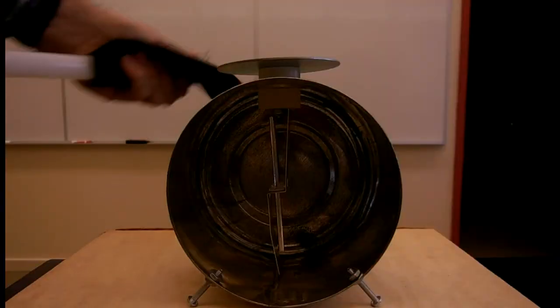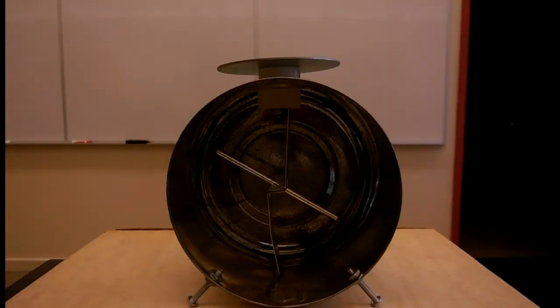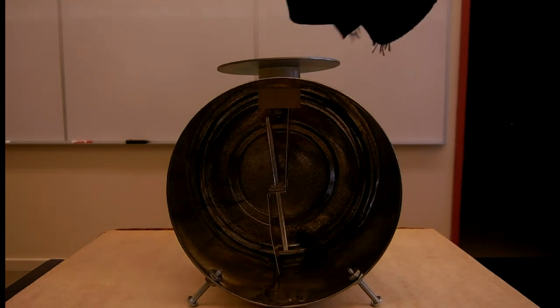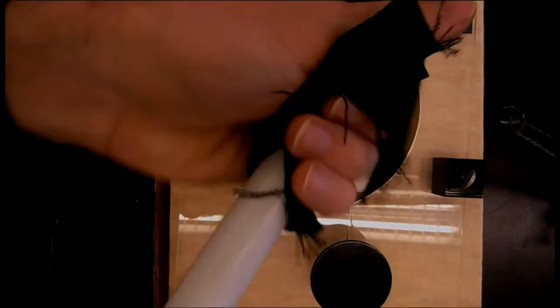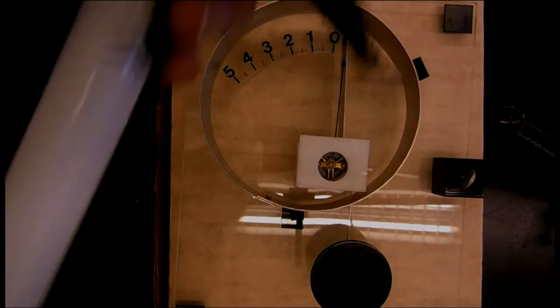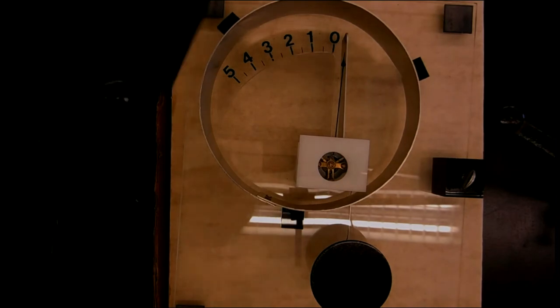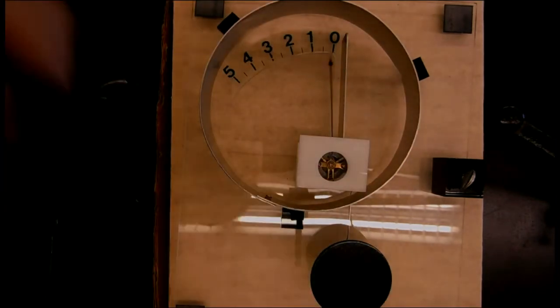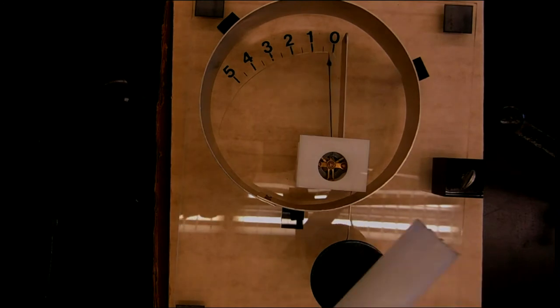This rather simple device is called an electroscope, and when I bring the plastic rod near it, you see that it disturbs the needle. Here's another slightly more sophisticated electroscope, and again, when I bring a charged object near to its bulb, such as the wool or the plastic rod, it disturbs the needle on the electroscope.